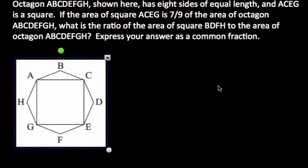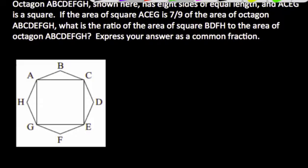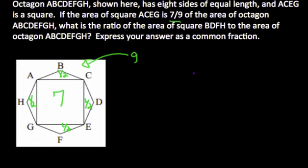So this is a problem that gets a little tricky. First thing to note is if this area is seven, we just call it seven to make it simple, and then the entire area we're going to call nine, the entire area of the octagon. That means that each of these triangles must have an area of one-half, so that we can get it to sum to nine. So a total area of two for the triangles.